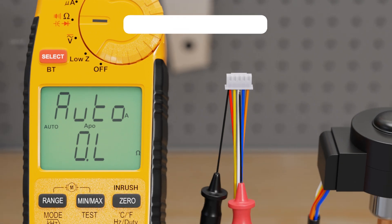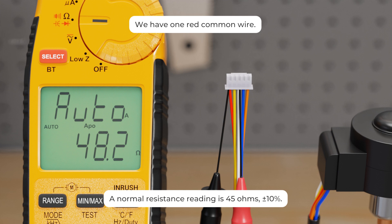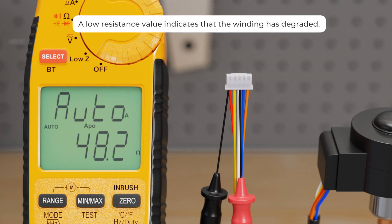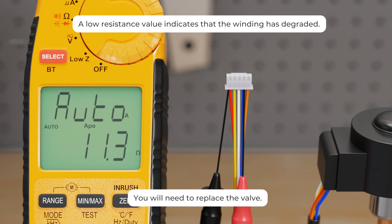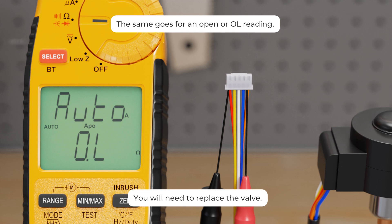In this case we have one red common wire and a normal resistance reading is 45 ohms plus or minus 10%. A low resistance value indicates that the winding has degraded. You will need to replace the valve. The same goes for an open or OL reading.